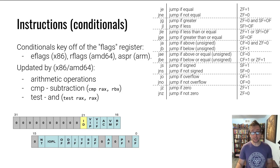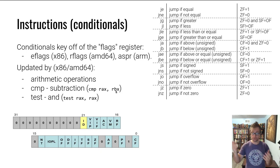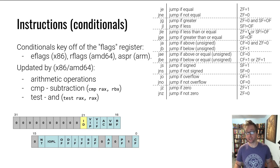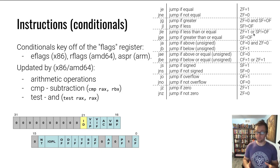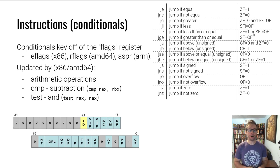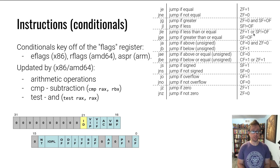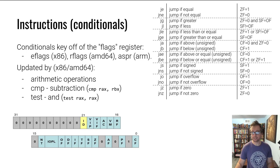By combining different flags, you can test many conditions. For example, 'jump less than or equal' checks that the zero flag is one, or that the sign flag is not equal to the overflow flag. That's how conditional control flow works in x86/AMD64. ARM is a little different but the concept is the same.